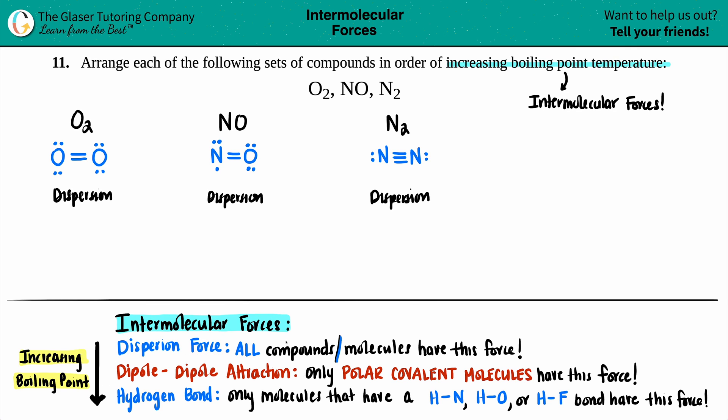So dispersion it up. Dispersion for O2, dispersion for NO, and dispersion for N2. These are your temporary dipoles, which are not permanent. They're because of instantaneous dipoles, but just know that they all have them. Now, dipole-dipole attractions, only polar covalent molecules have this force. So the key thing is, is now figuring out, is your molecule polar or is it nonpolar? And remember the acronym SNAP. I love the acronym SNAP. It helps a lot.